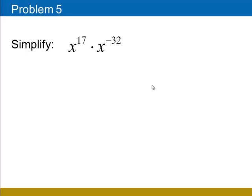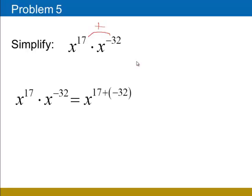The rule being displayed in this problem is the product rule. The product rule tells us that when we multiply two like bases, we add the exponents. So in this case, we'll add 17 plus negative 32. We're adding a positive number to a negative number, so we subtract the absolute values and keep the sign of the larger. 17 plus negative 32 is negative 15. We cannot leave a negative exponent, so we rewrite this as 1 over x to the positive 15th power.